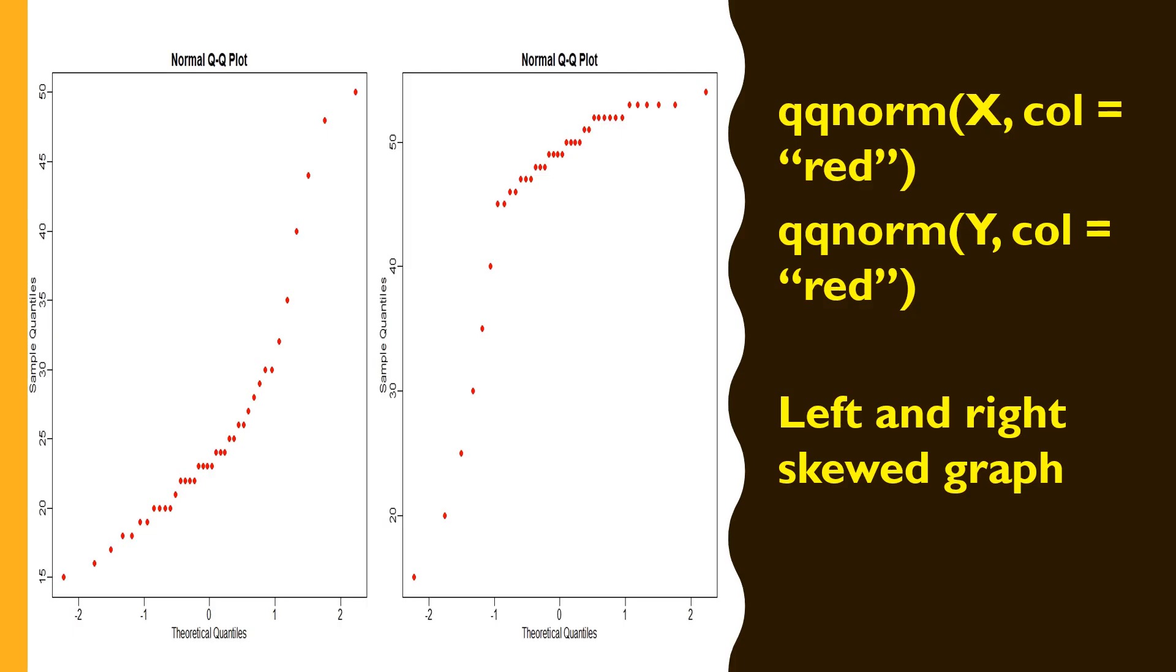Here we can see two examples of two different data sets, X and Y. We use qqnorm to form a Q-Q plot. As you can see, qqnorm X and qqnorm Y.